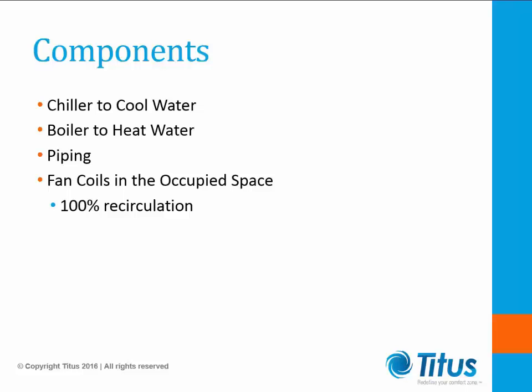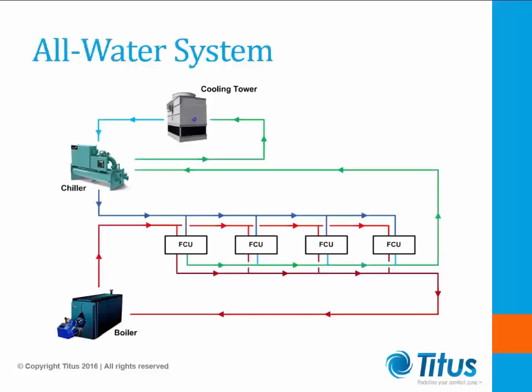Typically, a fan coil would be provided with 4 GPM of cold water and 2 GPM for hot water. However, this can vary wildly due to unit size, heating, and cooling loads in the occupied space. In all-water systems, the space fan coil will be sized to condition the space, ventilation, and infiltration loads. Consideration needs to be given to selection and operation to maintain both sensible and latent capacity of the fan coil. We will touch on control of the fan and chilled water valve later in the presentation.